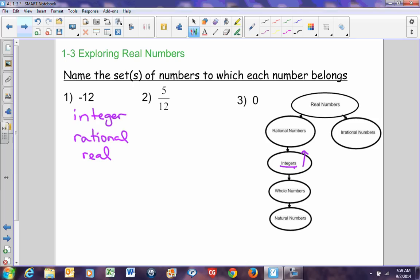If I used 5/12, the same thing happens. 5/12 is not an integer, but 5/12 is a rational number because it is a fraction of integers. So, I would start here at rational numbers and move up the chart so that I would go rational number and real number.